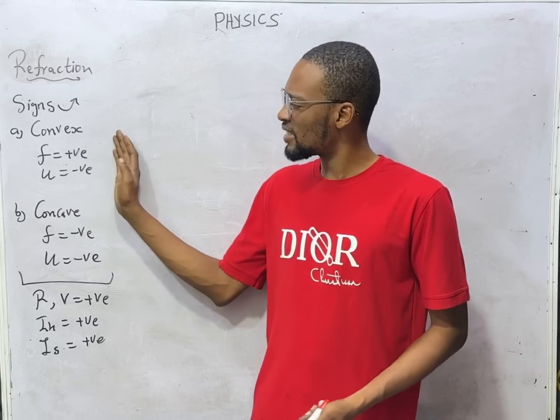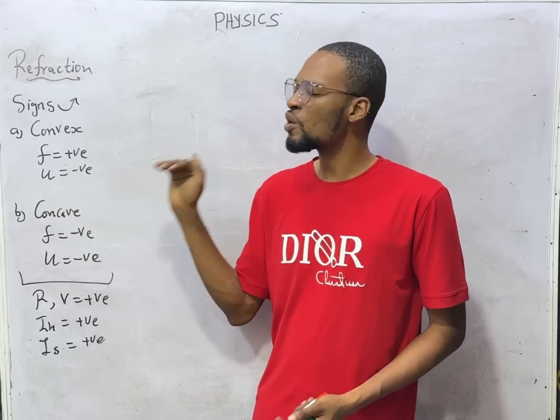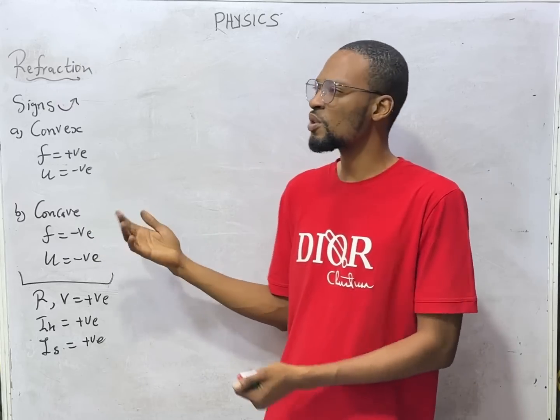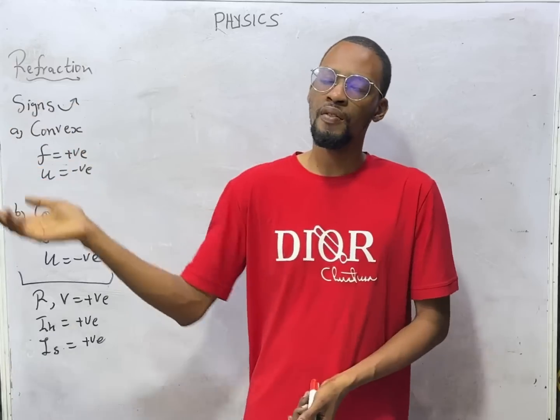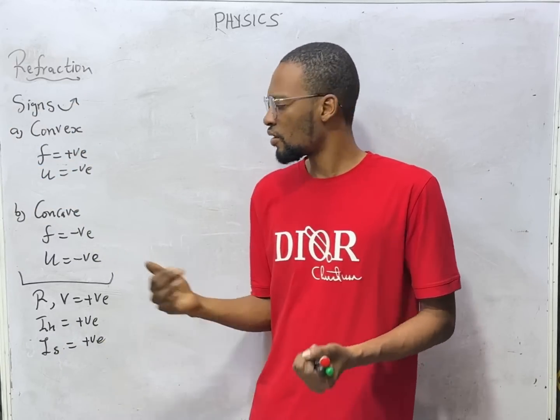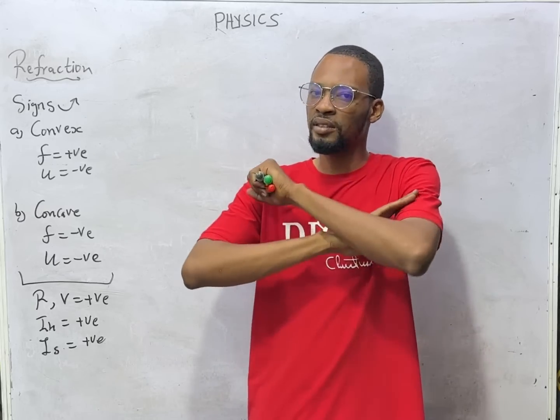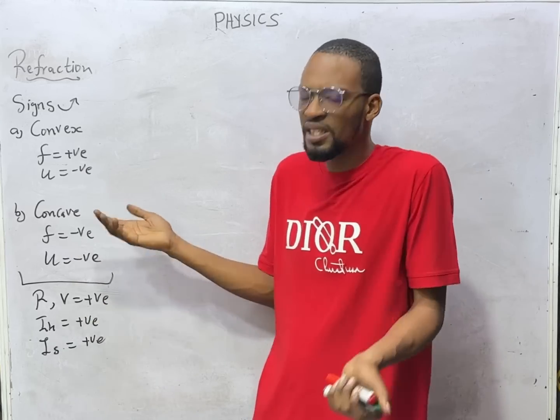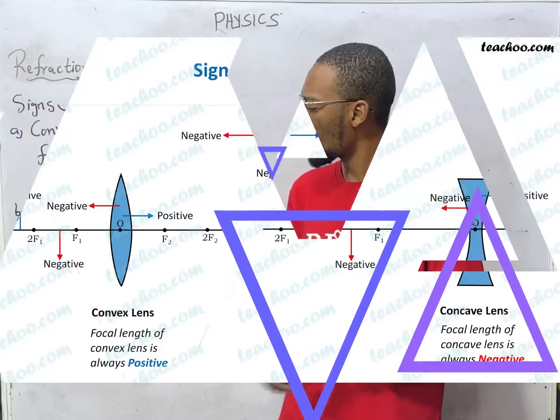For convex lens, focal length is always positive and object distance is negative because the object is placed towards the left side. For concave lens, the focal length is always negative and the object distance is negative because the object is placed always to the left side as well.